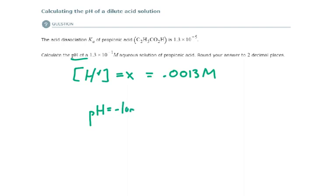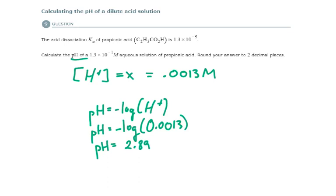pH is equal to the negative log of the hydronium ion concentration. pH is equal to the negative log of 0.0013. And that gives me a pH of 2.89 to two decimal places. And that makes sense. This is an acidic solution. So the pH should be below 7.